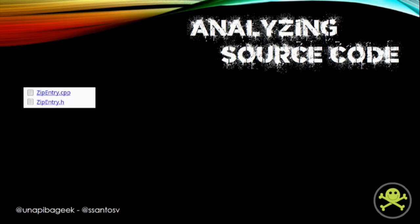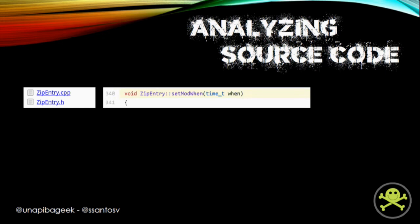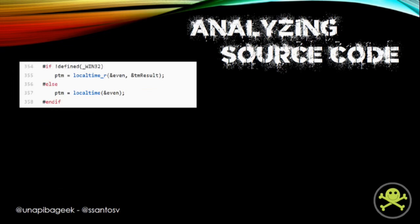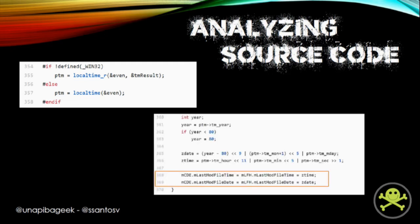SetModWhen is located in the zip_entry.cpp file of the source code of AAPT. There we have the method and its parameter. Remember that 'when' is equal to zero. Inside this method, there is another variable of time_t type named 'even', and the value of 'even' is the value of 'when', so 'even' is equal to zero too. But the question is — is the 'even' variable used for anything at all? Immediately after, 'even' is used as a parameter for the localtime function. PTM is a TM structure where localtime will save its result, and after that, the result is used to assign the last modified field for every file that will be added to an APK.